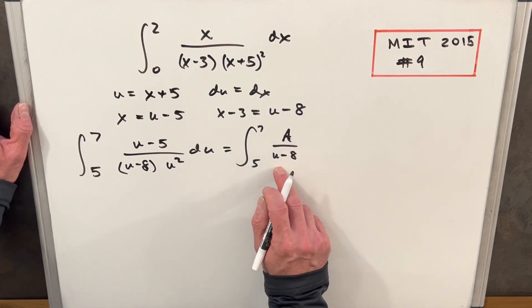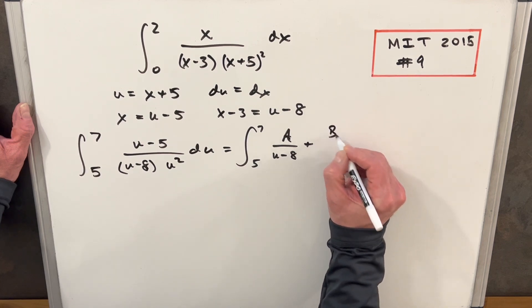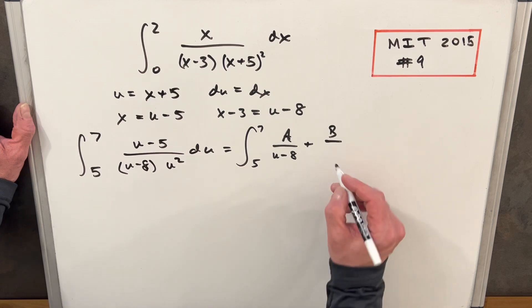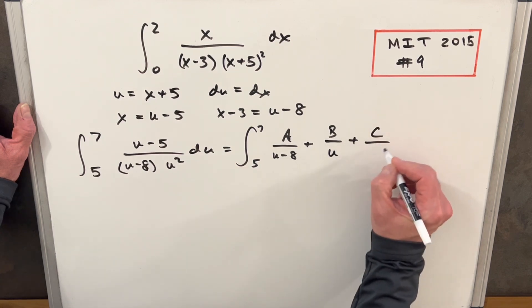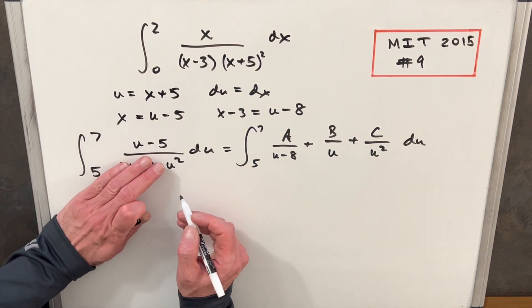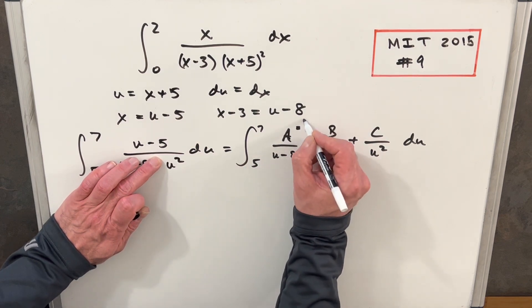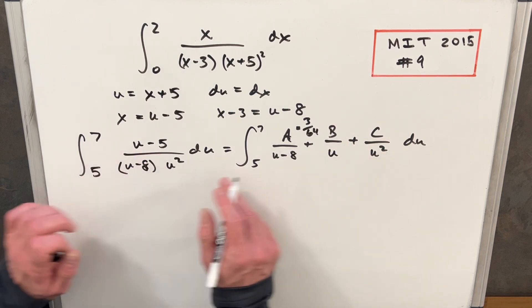Whatever's in the numerator should be one degree less than what you have in the denominator. Plus B, and this is like a building up the power case. So we'll have B over u plus C over u squared du. We'll need to plug an eight in here, and then we'll just kind of cover that up. We put an eight in for u, and that's going to be a three. And then we plug an eight in here, we get a 64. So our A is going to be three over 64.